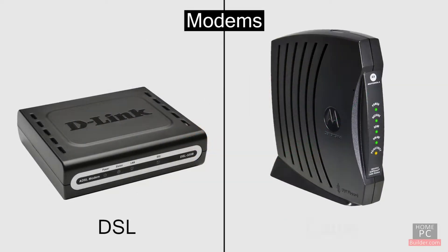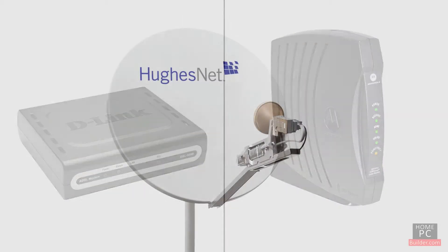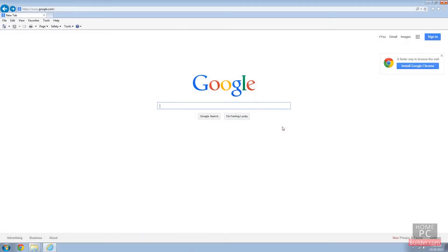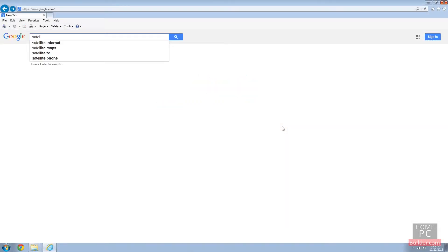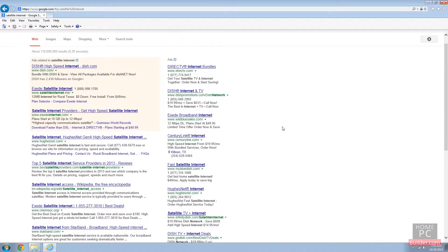DSL and cable modems are available in most cities in America. If they aren't available in your area, there's a third connection option through a satellite dish, which also uses an Ethernet adapter. Do a Google search for satellite Internet to see what's available in your area.